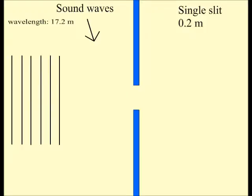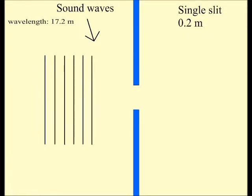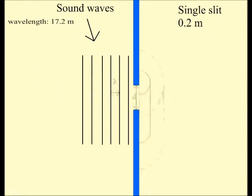Let's take an example. A sound wave with a wavelength of about 17 meters can easily bend around a gap or a corner that is 0.2 meters long.